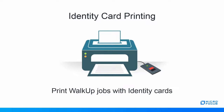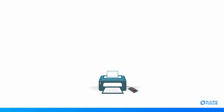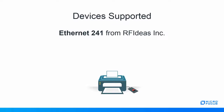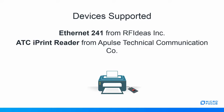This gap led to the creation of devices in the market which enabled existing printers to use this feature. One such device is the Ethernet 241 from RFIDES. This device allows using your existing card infrastructure with the printing ecosystem. You can find more details for this device on the RFIDES website. The release of iPrint 3 supports such devices — the first one being the Ethernet 241 and the second one is the ATC iPrint Reader from Apple's Technical Communication. This device also enables any printer to release jobs using the existing card systems of your organization.